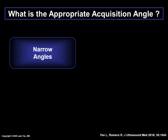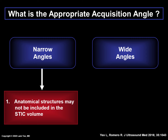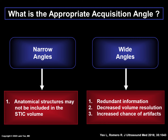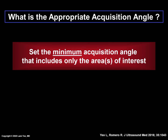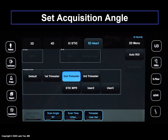What happens if the acquisition angle is too narrow? Anatomical structures may not be included in the STIC volume. Yet, the acquisition angle should also not be too wide. This leads to redundant information being included within the volume such as the fetal pelvis, decreased volume resolution, and an increased chance of artifacts being introduced such as fetal movements. The goal, therefore, is to set the minimum acquisition angle that includes only the areas of interest. By doing so, this will reduce artifacts and optimize STIC volume quality.